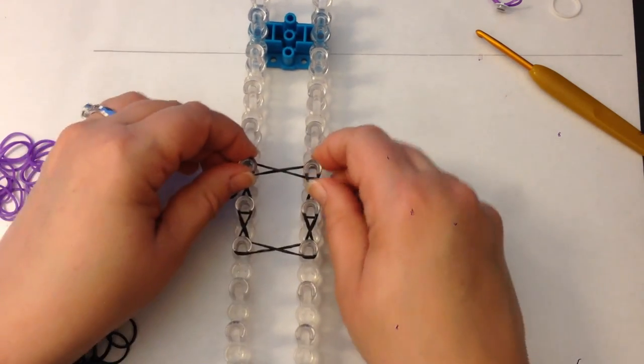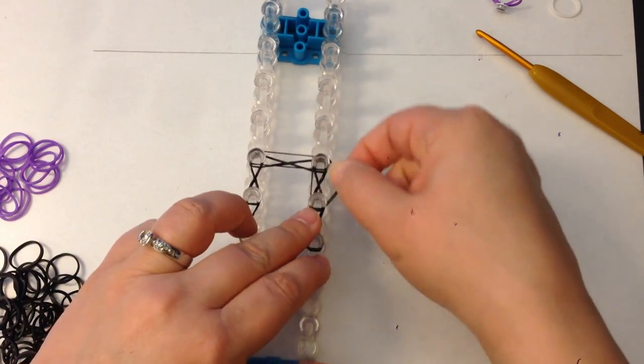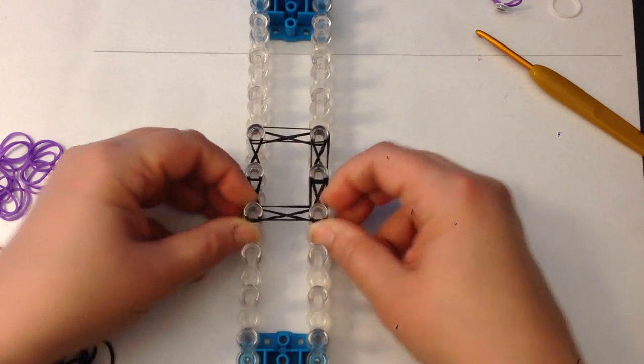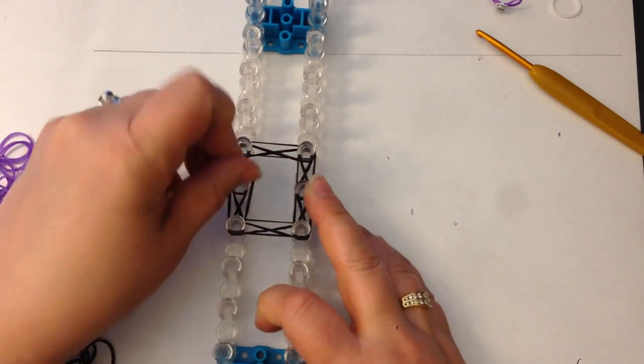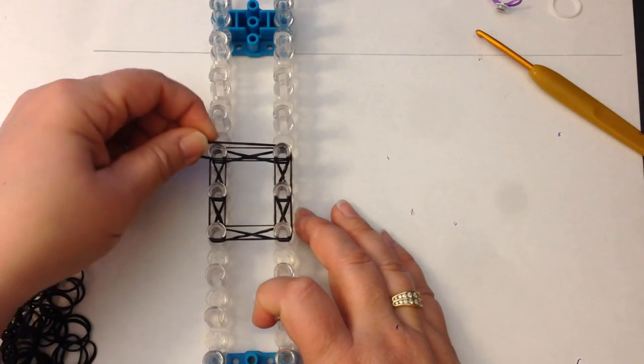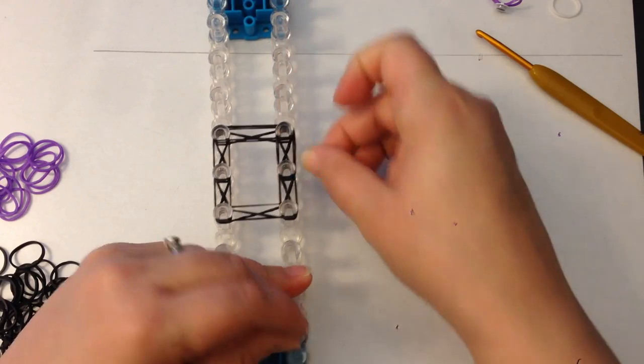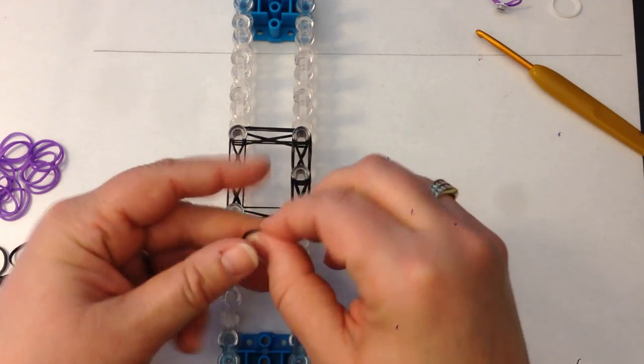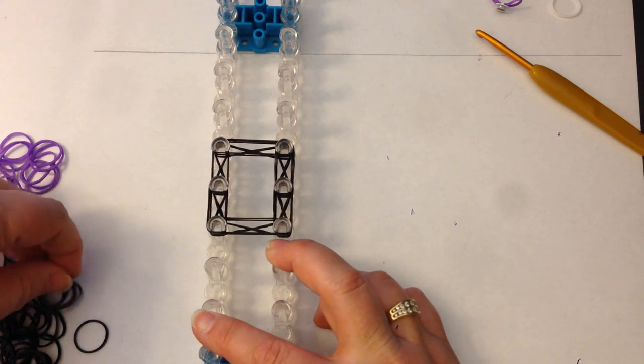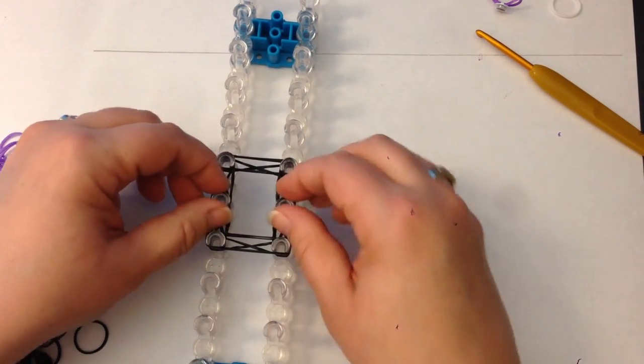So there we go. Now, our second and third row are both going to be black but all you do is lay your bands across the peg like normal. Push everything down. So that is row two. Now let's do row three.